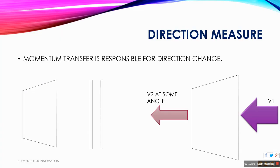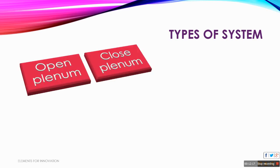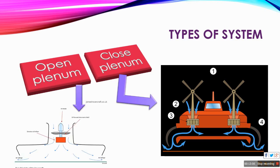Now let us move further and talk about the types of systems of the hovercraft. We have an open plane system and a closed plane system. In the closed plane system, a blockage or barrier is used — rather than moving the air directly outside or to the ground, it first strikes a barrier, changes its direction, and moves out. This is a more efficient way of generating thrust because after striking, the momentum change is less and the air escapes out less, hence we get more thrust. In the open plane system, the air directly gets out from the skirt, giving less thrust in comparison to the closed plane system.